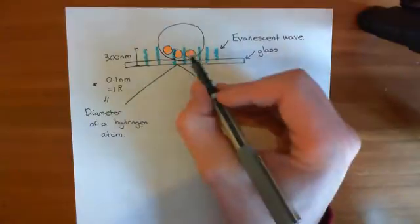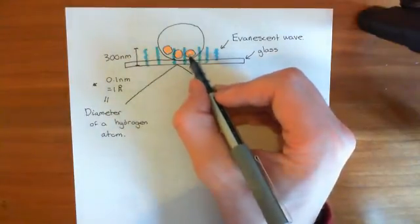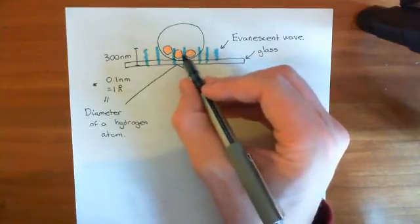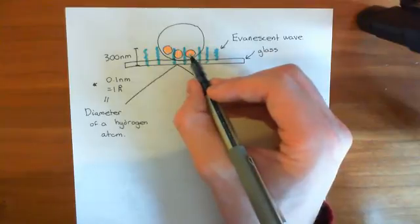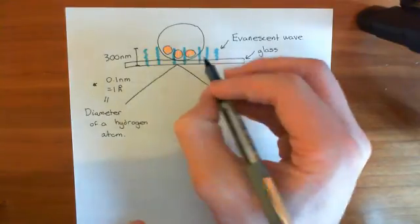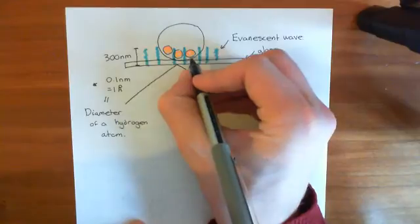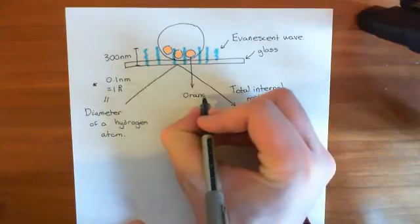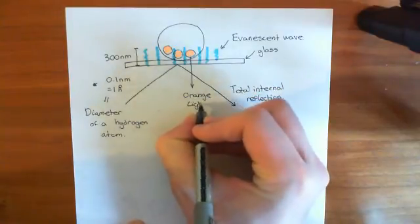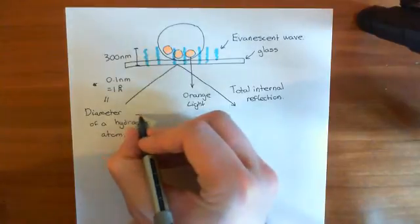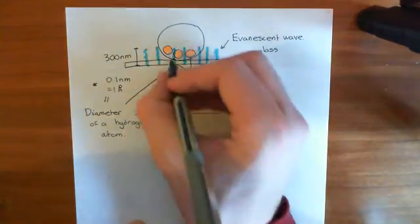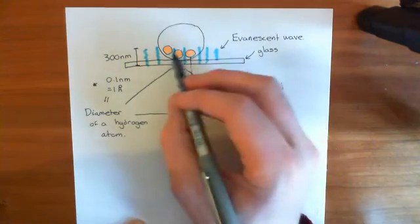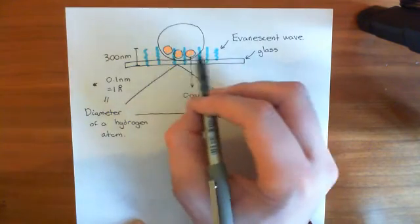This energy is going to excite the acridine orange — it's going to absorb the energy from this evanescent wave and then re-release this energy as orange light. So we'll get orange light coming back at us. What we do is take a picture of this orange light with a camera, collecting all the orange light coming off it, and we get a 2D picture of a very thin layer of our cell.